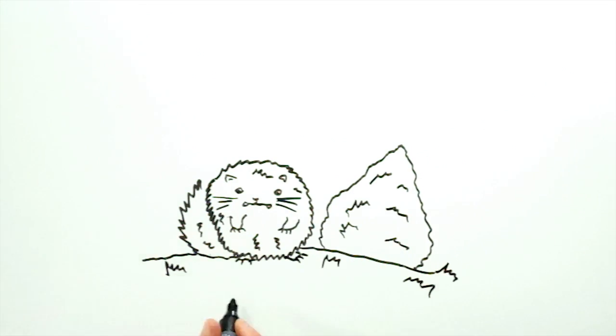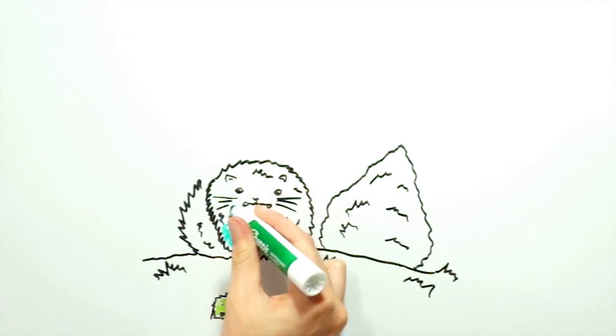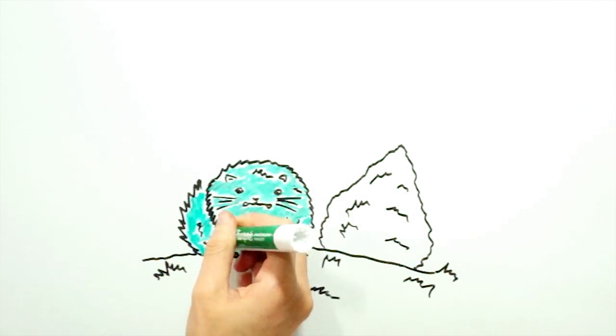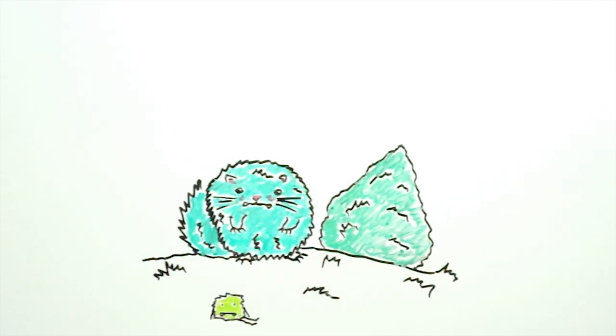It might seem like a very good idea for animals to have green fur. After all, it would allow them to hide in undergrowth and evade predators or jump out and surprise prey. So why have no animals evolved green fur?